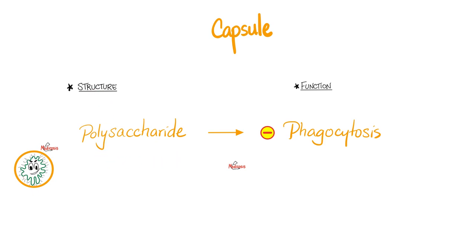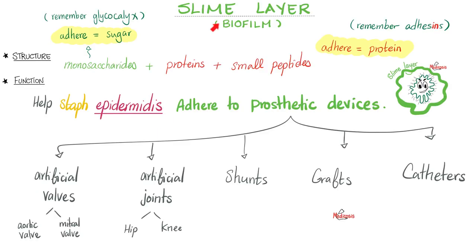The capsule is made of polysaccharides and inhibits phagocytosis. Don't forget the slime layer — it is relevant in staph aureus and even more relevant in staph epidermidis. The slime layer is made of sugar — because sugar makes you sticky — plus adhesion proteins. It allows adherence to all kinds of prostheses: artificial valves, joints, shunts, grafts, catheters. That's why these must be kept clean in the hospital.